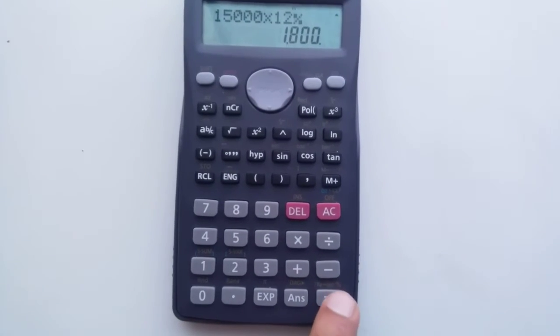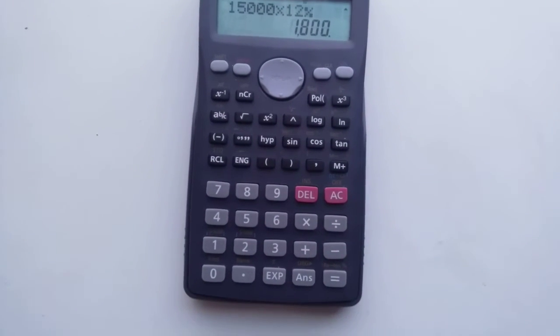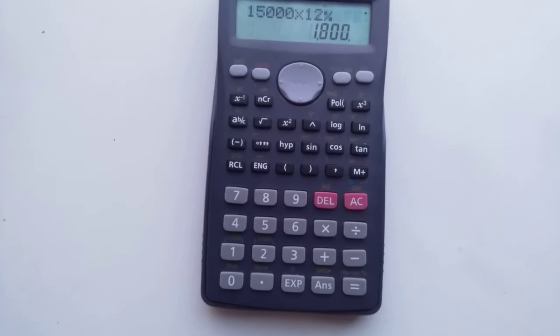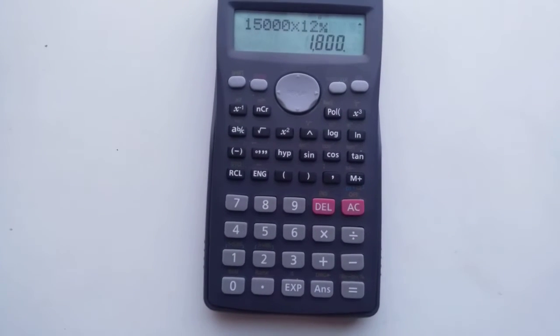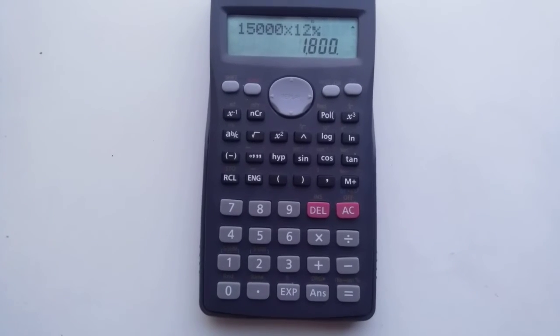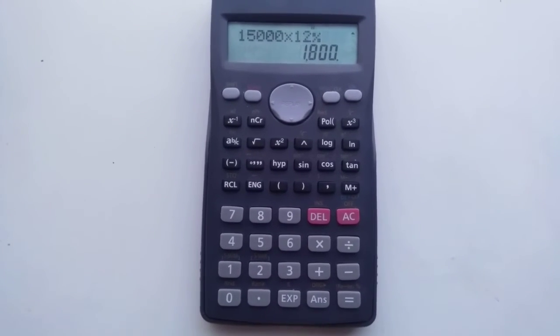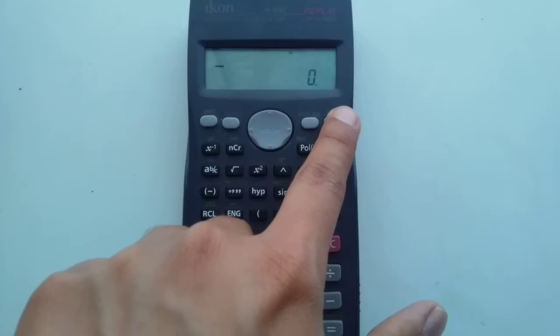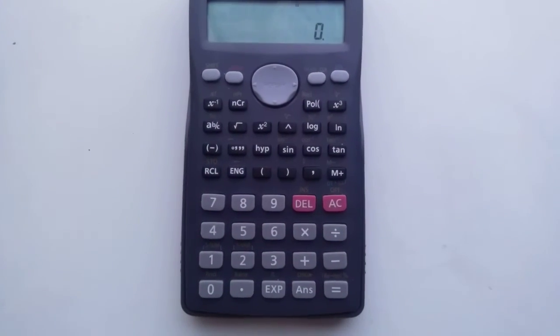So I press this, so 1,800 is the 12% of 15,000. I will repeat this again to demonstrate you so you will understand it very easily. So let's go back to zero.